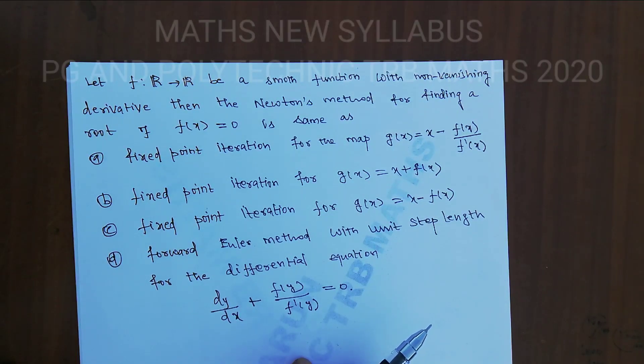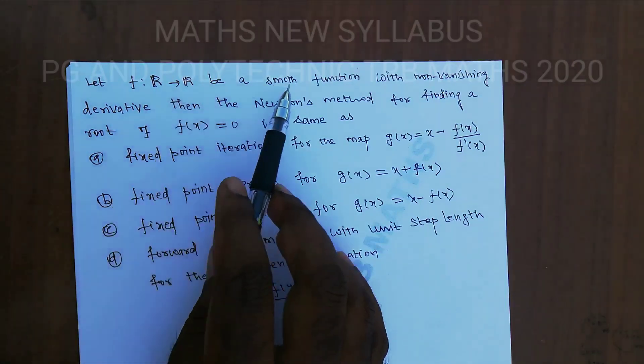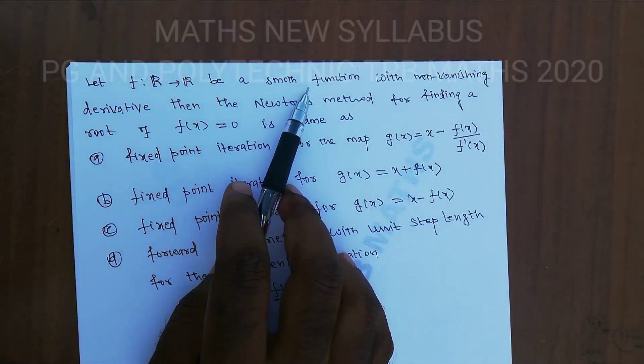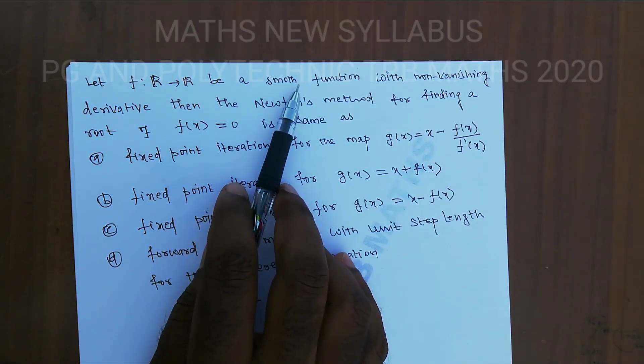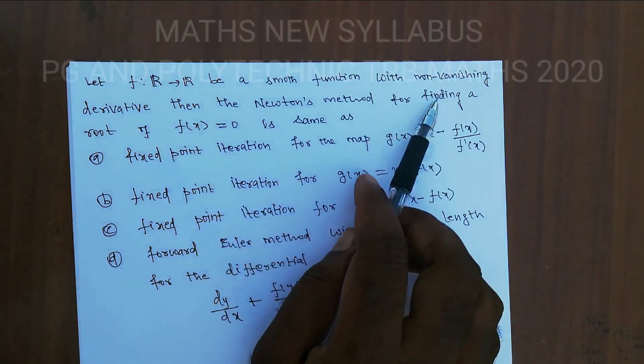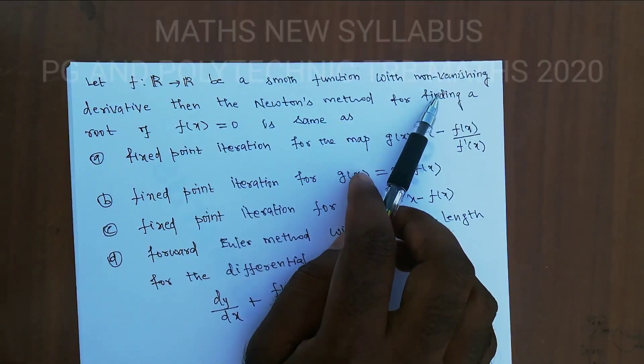f is a smooth function, that is, an infinitely differentiable function, with a non-vanishing derivative — meaning the derivative is not equal to 0.